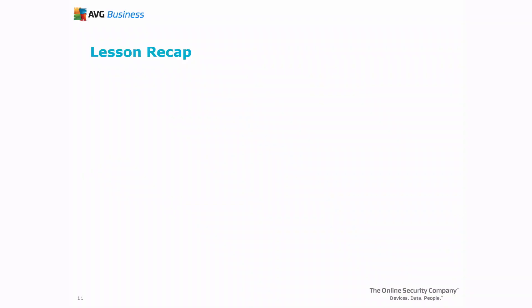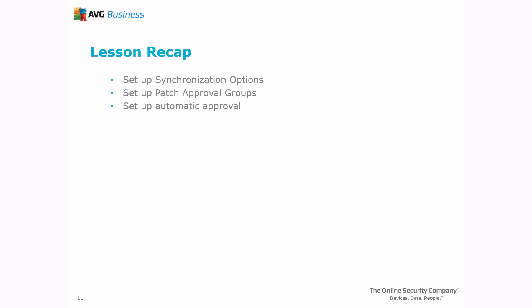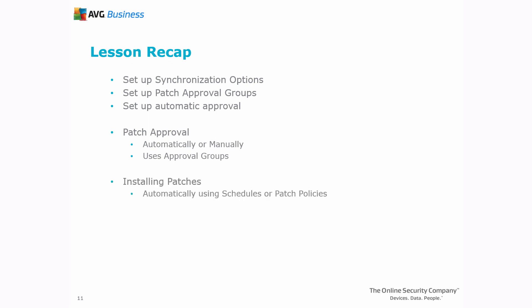That wraps up our lesson on approving patches. We've covered the three main tasks for advanced patch management configuration in Manage Workplace: configuring synchronization options, creating approval groups, and setting up automatic approval. Approving patches can be done using automatic approval options; however, patches can be manually approved under the Patch Management – Patch Approval section. In either case, approval groups are used to steer the approval of patches to the intended devices. Installing patches can be done automatically using the schedules or the patch policies. You also have the option to use the device report or patch report to run patches immediately on a filtered group of devices or to confirm the status of all patches.